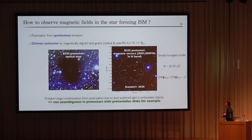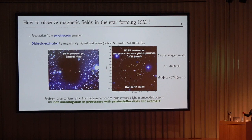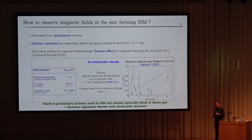The first technique is dichroic extinction, where we look at how unpolarized light from background stars gets polarized by dust when passing through star-forming cores. Here is an example in the B335 protostar. However, when a protostellar disk is forming in a collapsing protostar, there is an isotropic radiation field, making it ambiguous to derive the magnetic field topology from this technique.